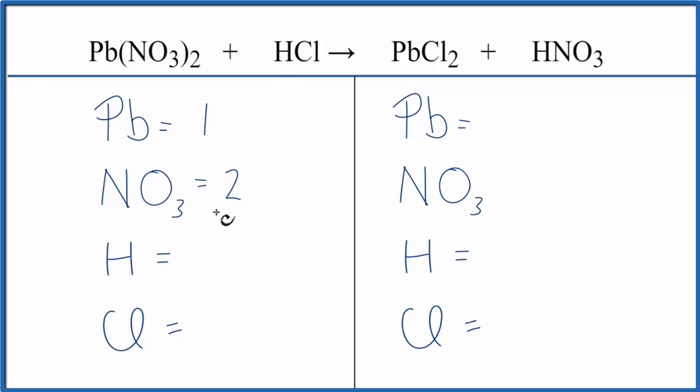Hydrochloric acid, we have one H and one chlorine. On the product side, we have Pb, that NO3, that nitrate, we have one of those, hydrogens one, chlorines two.